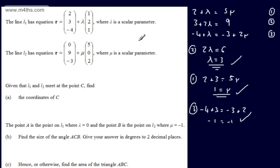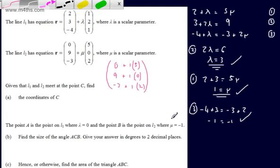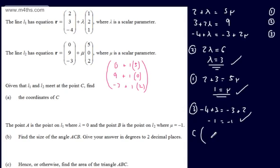We can now find the coordinates of C by substituting μ = 1 into L2. That gives (0 + 5, 9 + 0, -3 + 2) = (5, 9, -1). So the point of intersection C has coordinates (5, 9, -1).